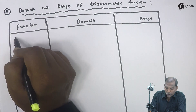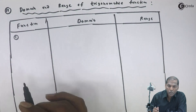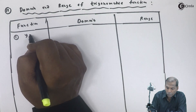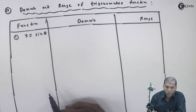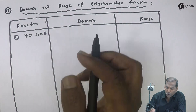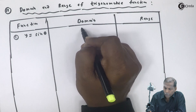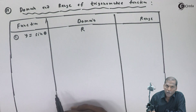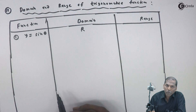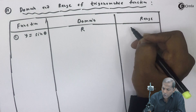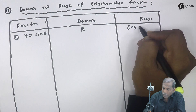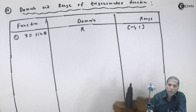The first function is number one: y equal to sin theta. For sin theta, the domain is the set of all real values, that is capital R. The range has a minimum value of minus one and a maximum value of plus one, so minus one less than or equal to sin theta less than or equal to plus one. The range is the closed interval minus one comma plus one.